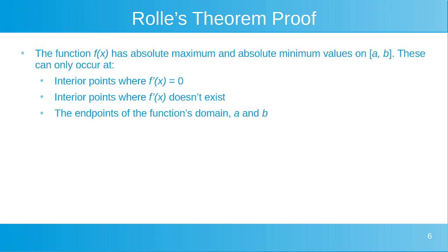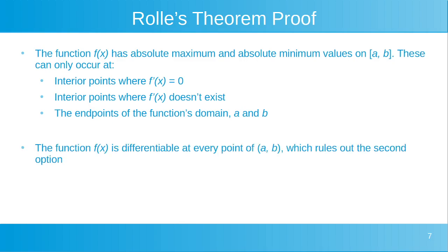Now we're going to prove Rolle's Theorem. The function f of x has absolute maximum and absolute minimum values on the closed interval from a to b. These can only occur at interior points where f prime of x, the derivative, is equal to 0; at interior points where f prime of x doesn't exist; and at the endpoints of the function's domain, a and b. The function f of x is differentiable at every point between a and b, so that rules out the second option.